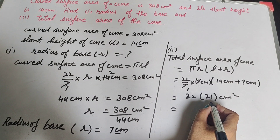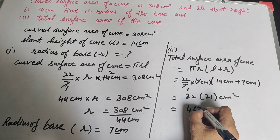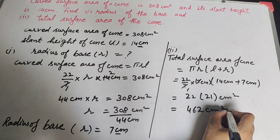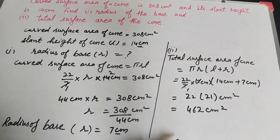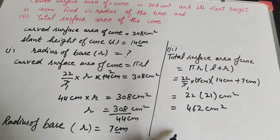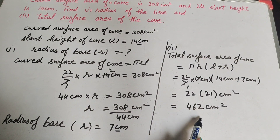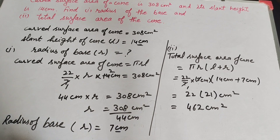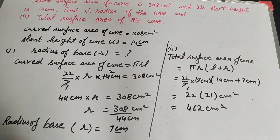So the total surface area of the cone is 462 cm². Thanks for watching — like, comment, and share my video, and subscribe to my YouTube channel.